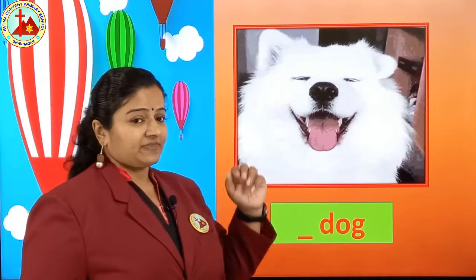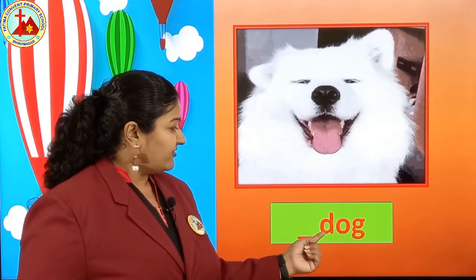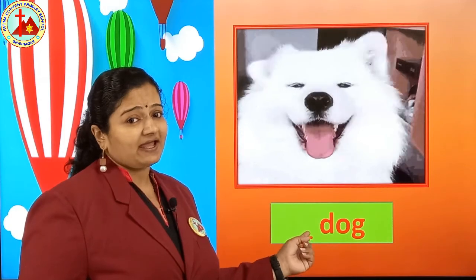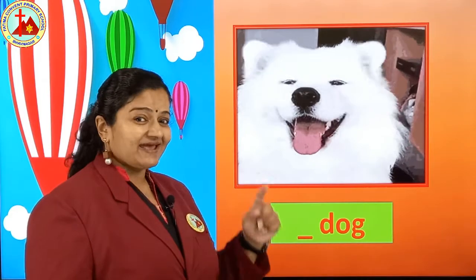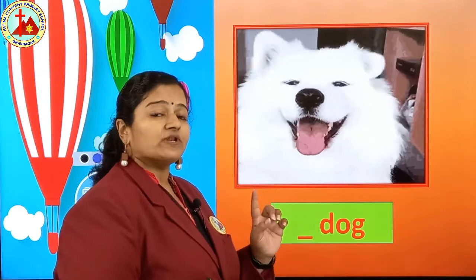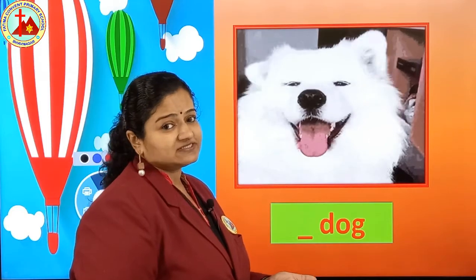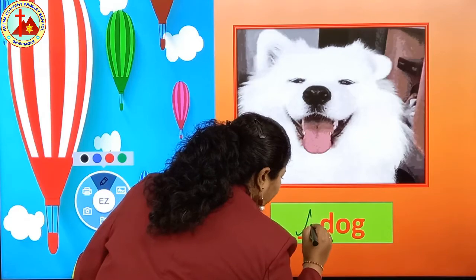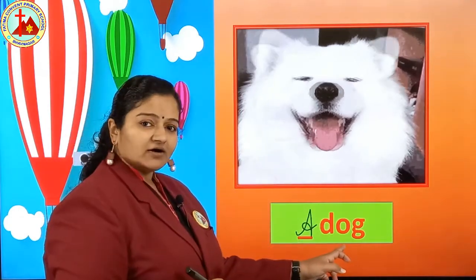Dog. Dog spelling starts with D, O, G. First letter is D. D is not a vowel, so we write A dog. We already learned cursive writing, so we will write cursive capital A. A dog.